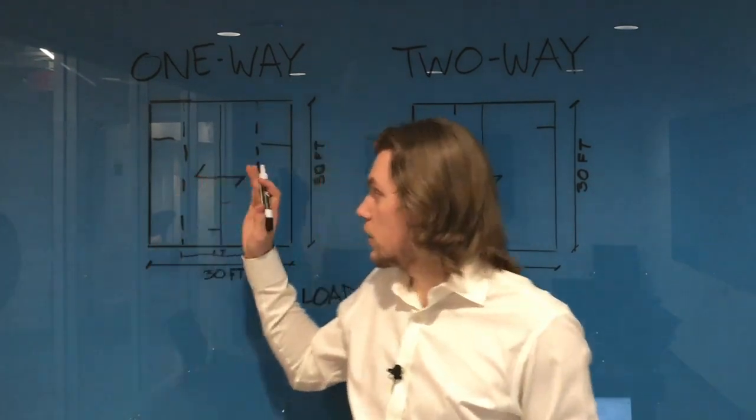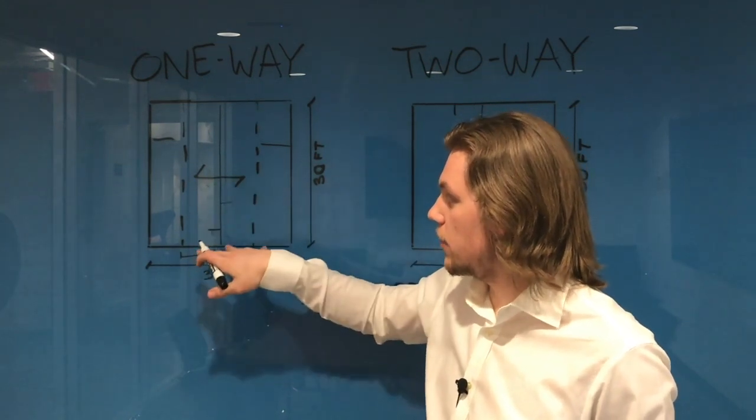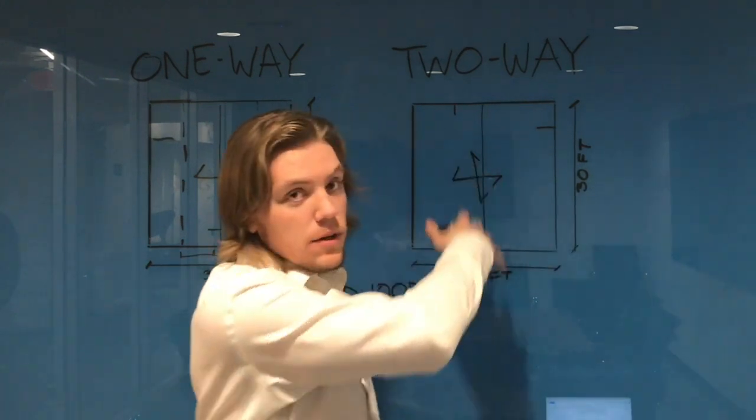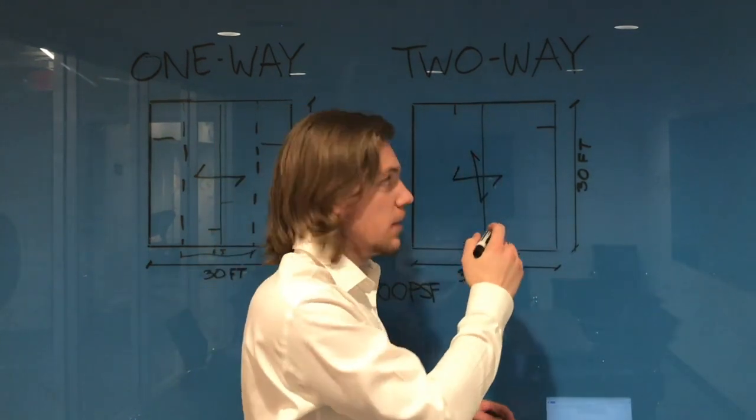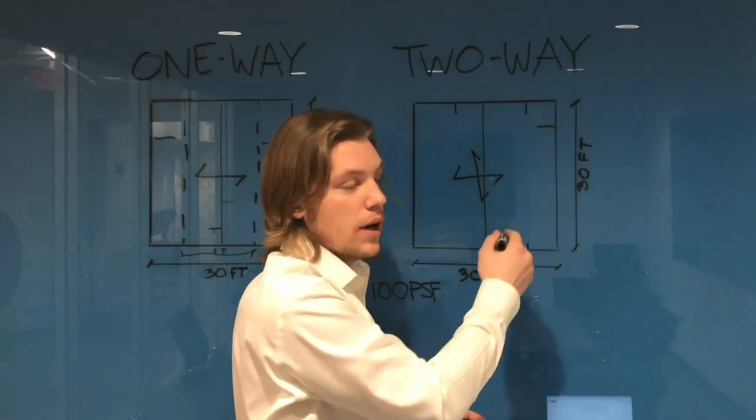In this case, we're seeing distributed loads on these three beams and then those three beams are carrying the reactions to the girders. But in this case, we're going to have distributed loads on all the members because the load is going to go to the closest member wherever you're located on the slab.